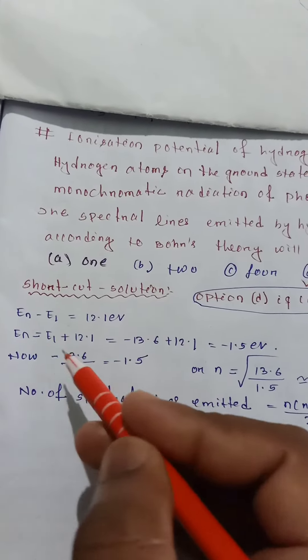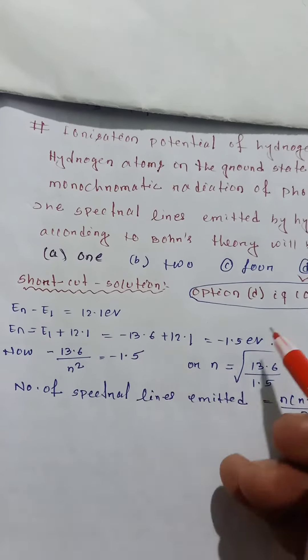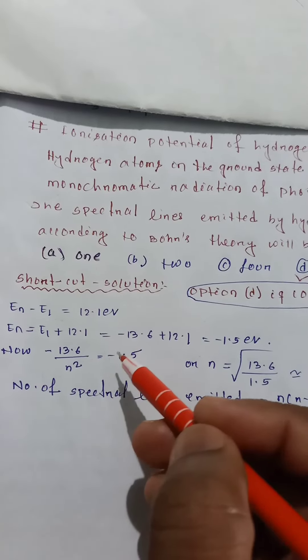En is equal to what? En is equal to minus 13.6 by n square. This is the En value. And the negative symbols cancel.